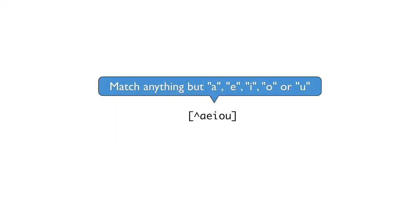If the group begins with a caret, that inverts the group and says that any character except the ones inside of the group are acceptable for the match. So if you wanted to accept any character except vowels, you could write open square bracket, caret, A-E-I-O-U, and then close bracket.